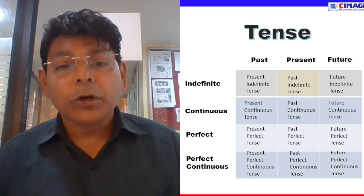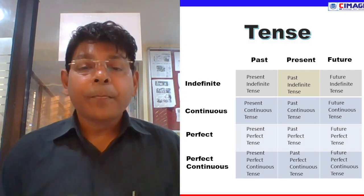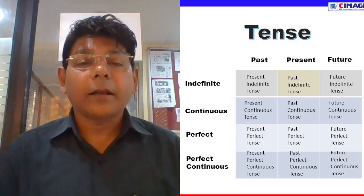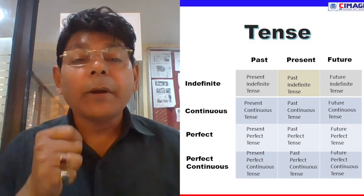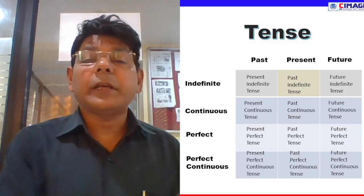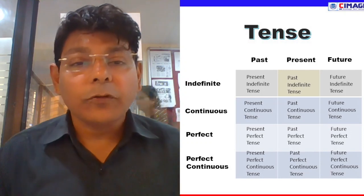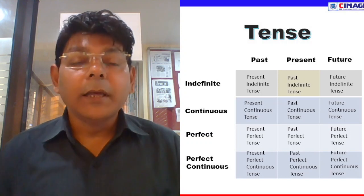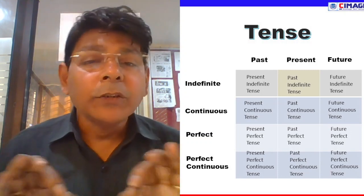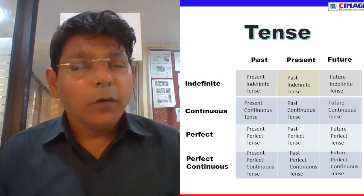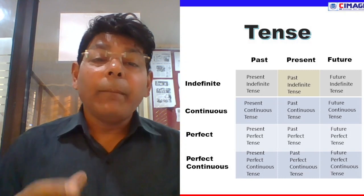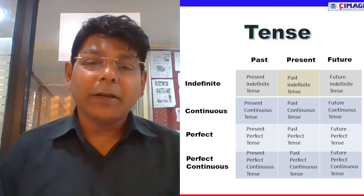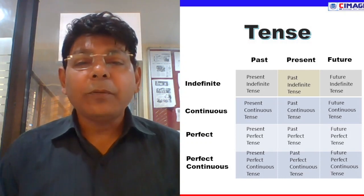Present perfect tense में — मैंने coffee पी ली है / मैं coffee पी चुका हूँ. Past perfect tense में — मैंने coffee पी ली थी / मैं coffee पी चुका था. Future perfect tense में — मैं एक घंटे में coffee पी चुका हूँगा. Present perfect continuous — मैं coffee पीता रहा हूँ, यानि पहले से भी पीता था और अभी भी पीता हूँ. Past perfect continuous — मैं last year तक चाय पीता रहा था, यानि काफी दिनों से पी रहा था लेकिन last year के बाद छोड़ दिया. Future perfect continuous — मैं आने वाले समय में भी चाय पीता रहूँगा.